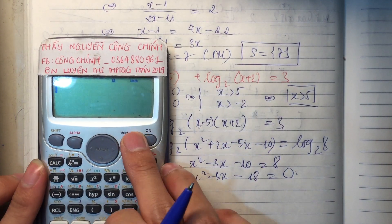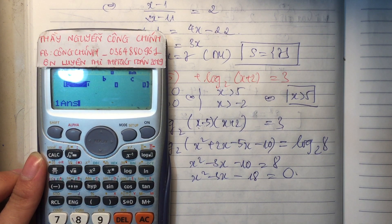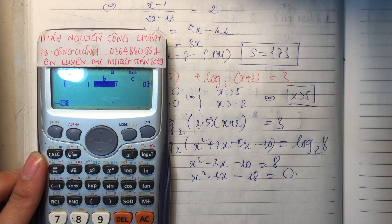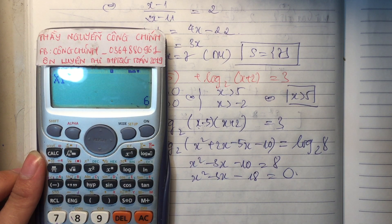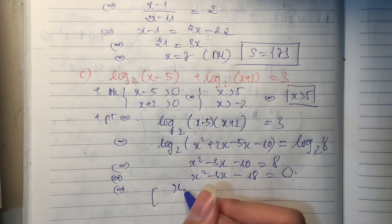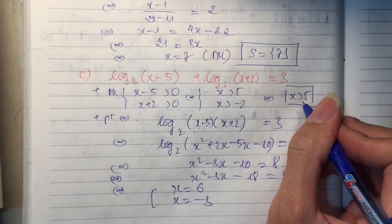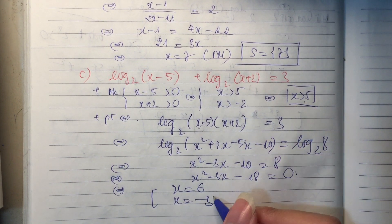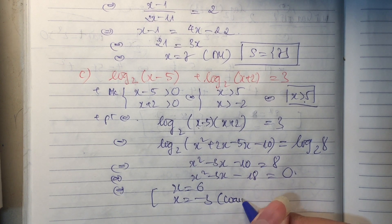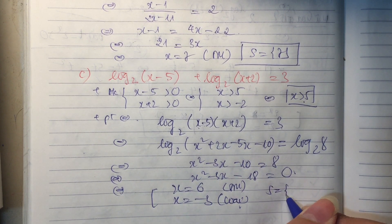Các em bấm vào máy tính: hệ số 1, âm 3, âm 18. Ra 6 và âm 3. Cái nào thỏa mãn x lớn hơn 5 thì lấy. Như vậy âm 3 này bị loại, cái 6 này thỏa mãn. Phương trình này chỉ có 1 nghiệm duy nhất là 6.